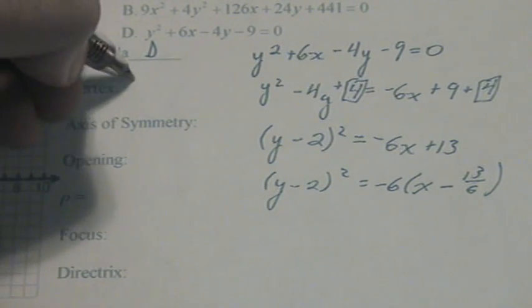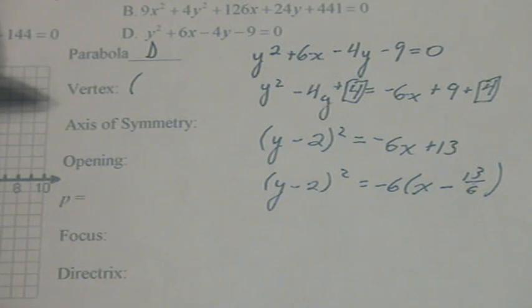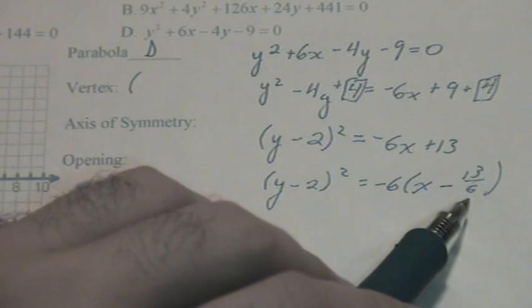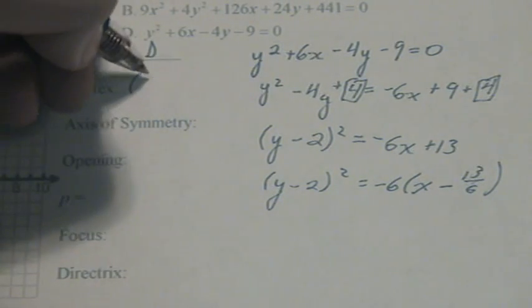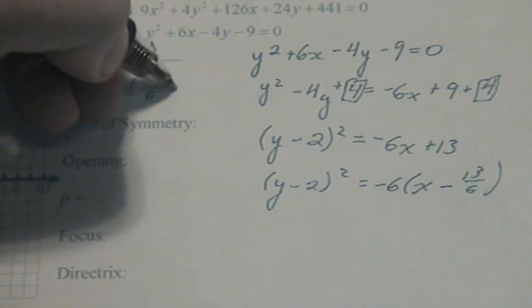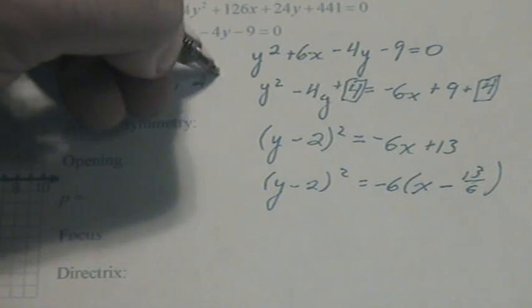the vertex. Remember, y minus k and x minus h. There's our x value, 13 over 6 comma 2.